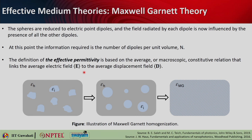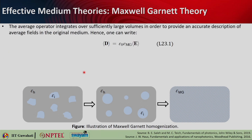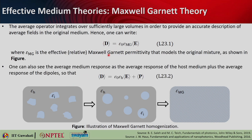You can define the effective permittivity based on the average or macroscopic constitutive relationship that links the average displacement field to the average electric field: D = epsilon * E. Here epsilon becomes the effective permittivity of that medium. The average operator integrates over sufficiently large volumes to provide an accurate description. So you can write: <D> = epsilon_0 * epsilon_MG * <E>, where epsilon_MG is the Maxwell-Garnett effective permittivity. The displacement field has two parts: the average response of the host medium plus the average response of the point dipoles (the inclusions).